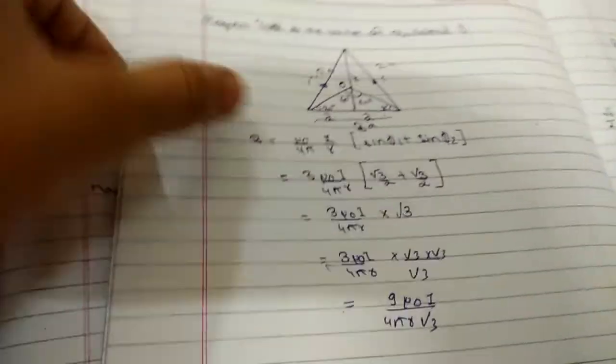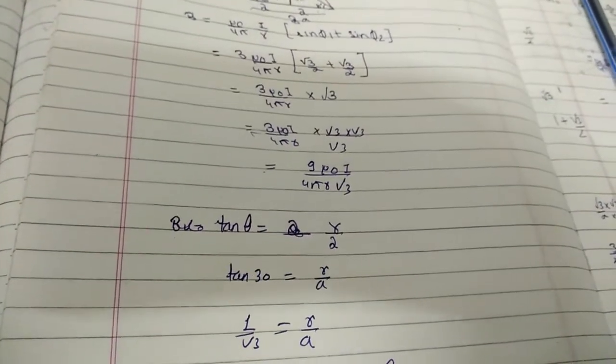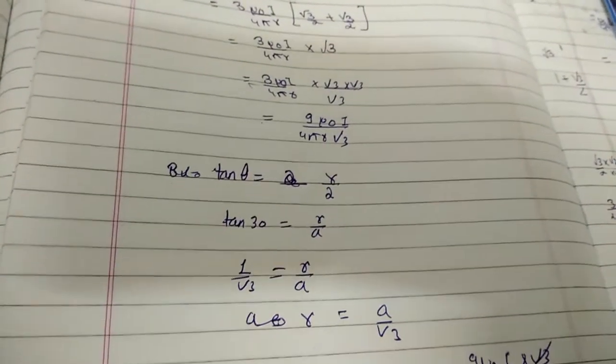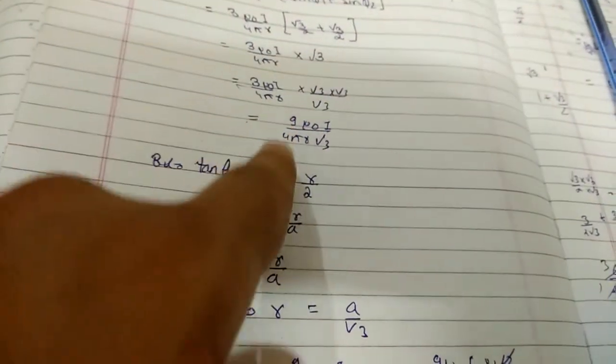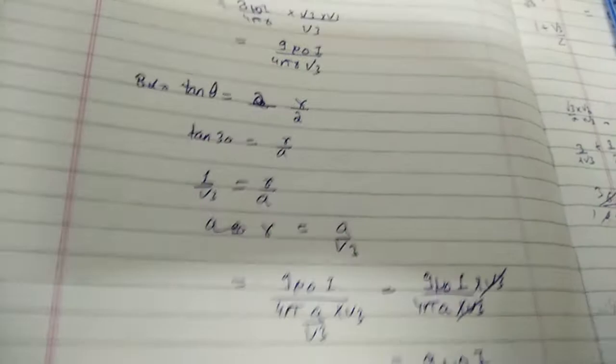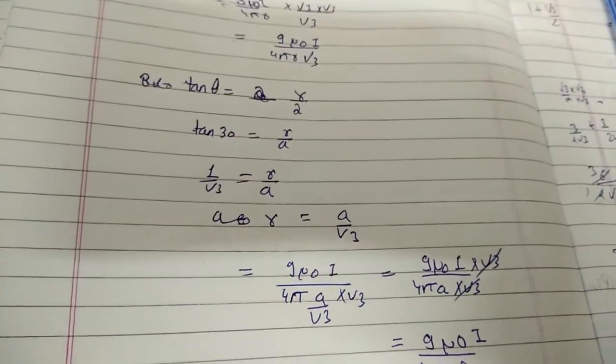We can find the value of r from tan θ, so tan 30° = r/a = 1/√3, thus r = a/√3. By putting the value of r, we get 9μ₀i/4πa. Thank you.